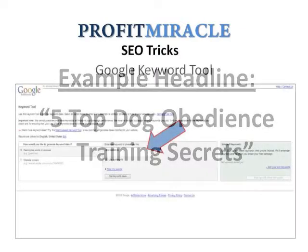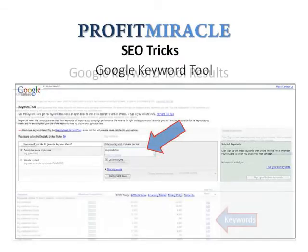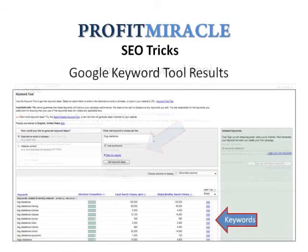But first, make sure to do your keyword research. You need to do this to find out which keywords are highly targeted within your niche, and then include them in the title of your article. To perform a keyword search, simply go to Google's Keyword Tool and place your keyword into the search box to generate keyword ideas.